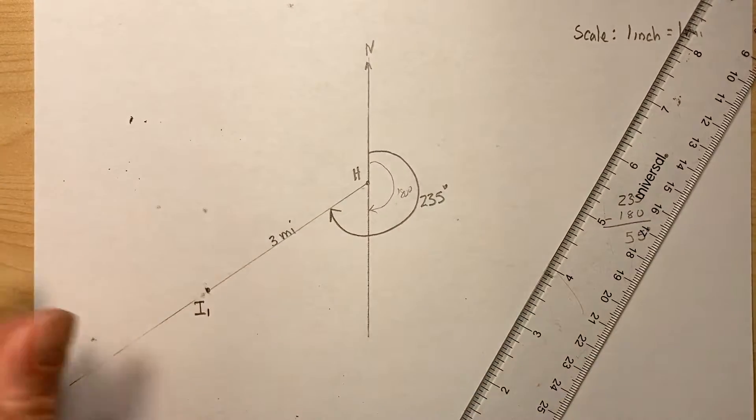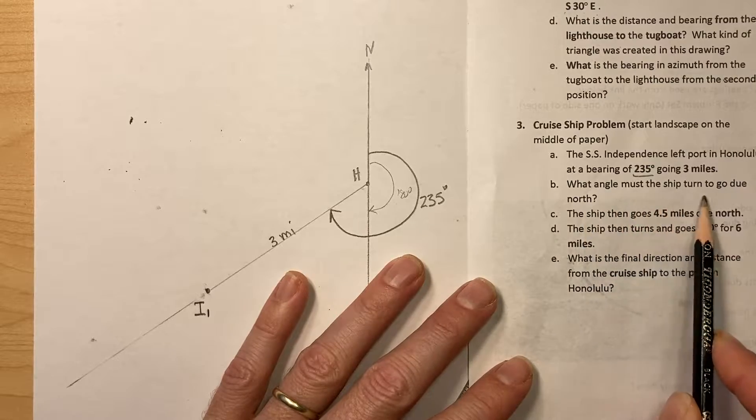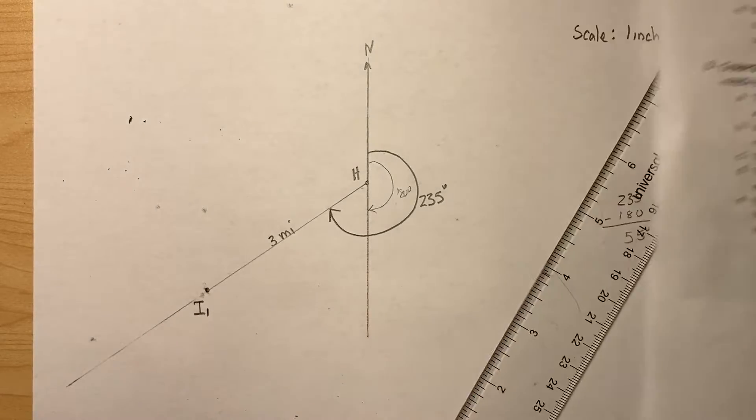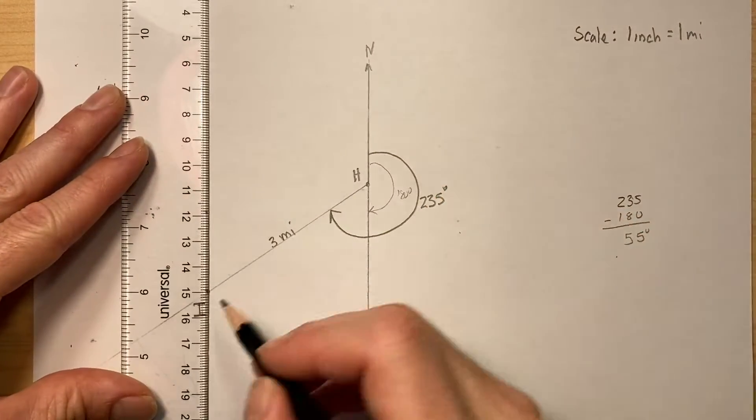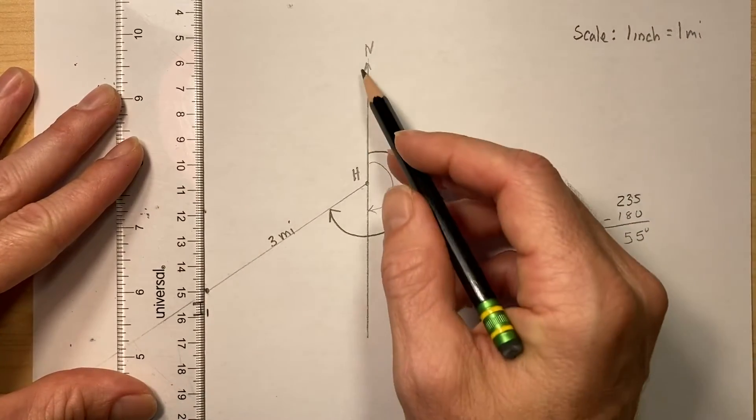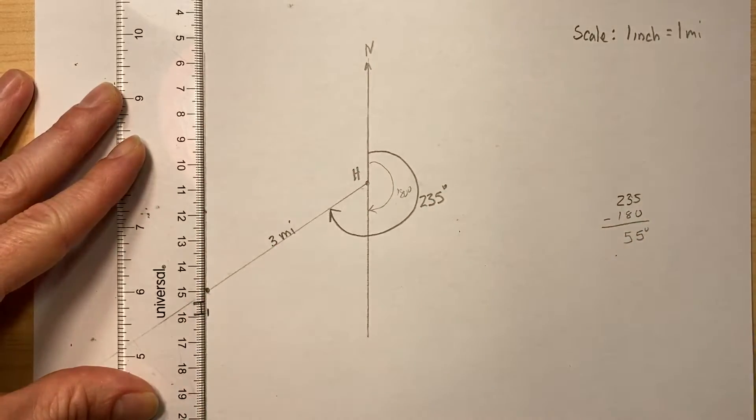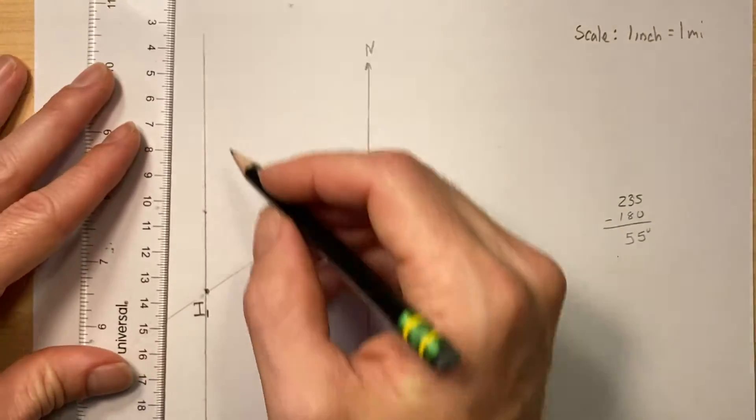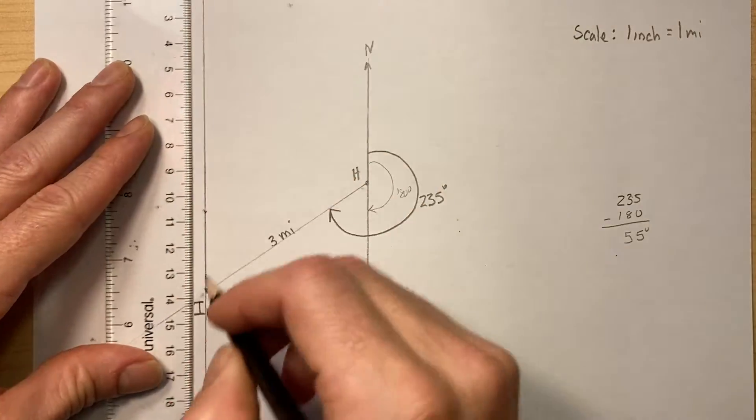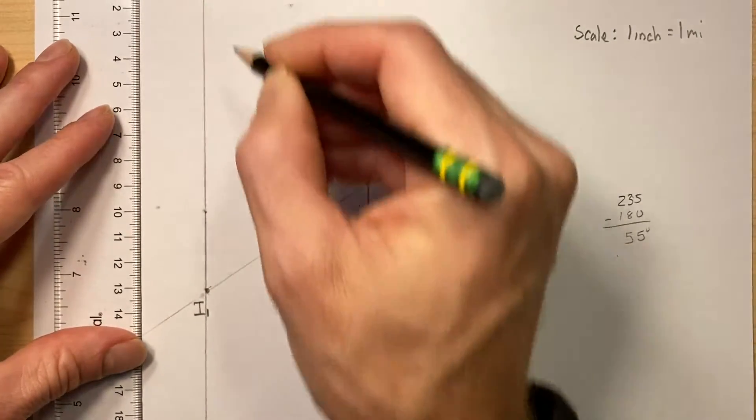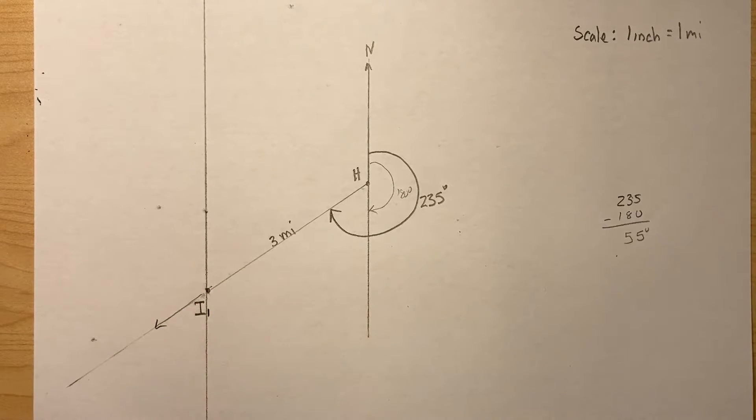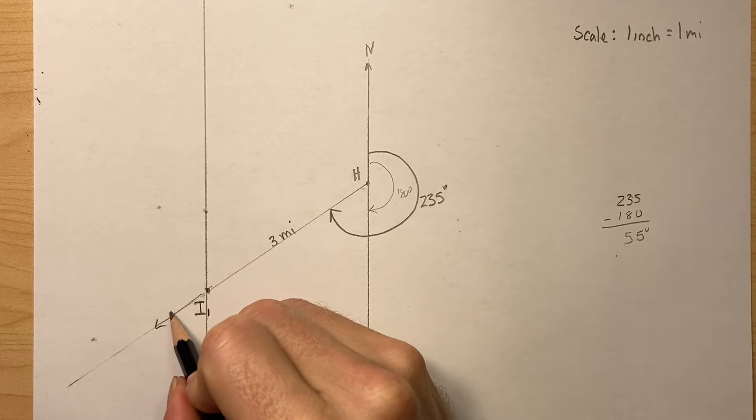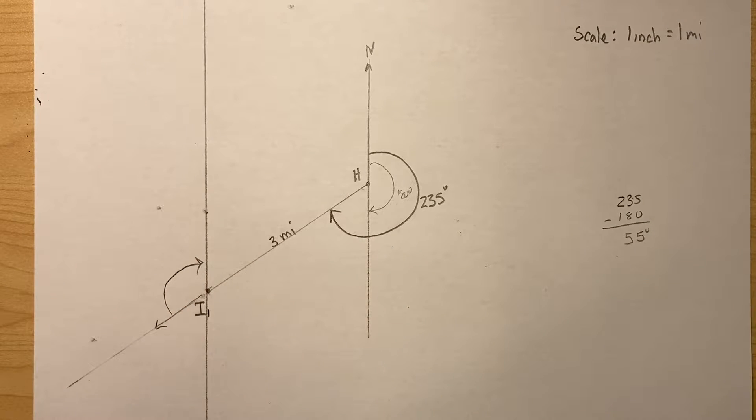Now, what angle must the ship turn to go due north? Okay, so let's do north. Due north is going to be a parallel line with this north-south line here. So let's make another north line. And the ship is facing this direction, so it wants to turn to north. So what is this angle right here?